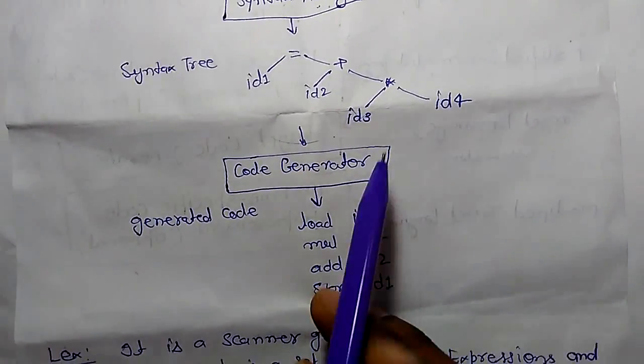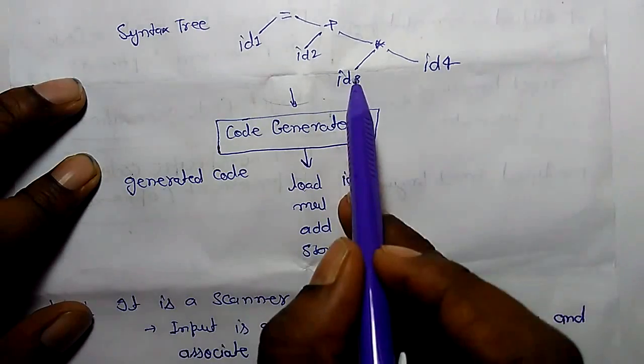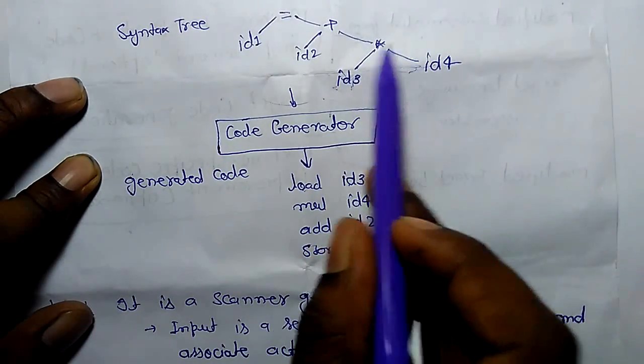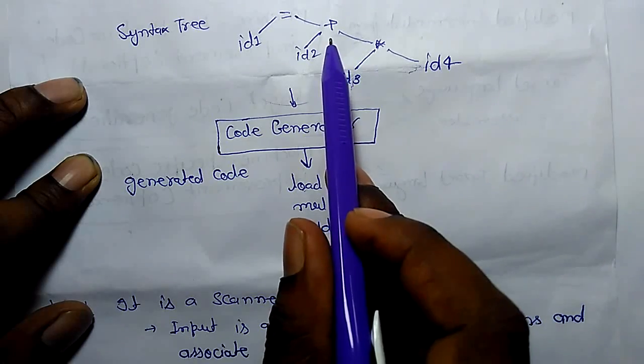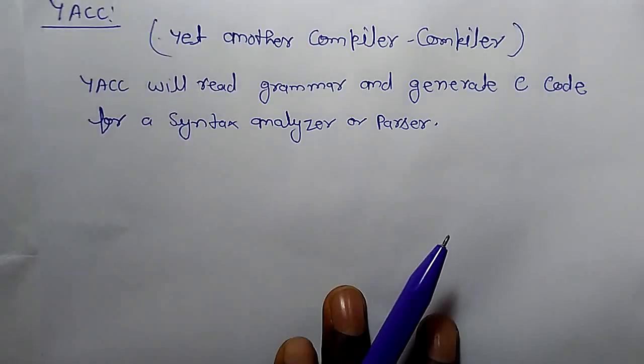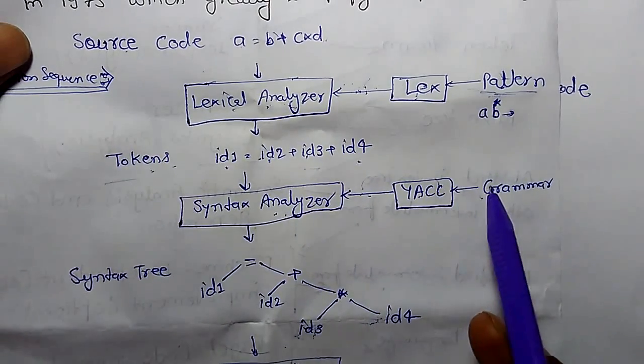In this syntax tree, first you have loaded id3 because this operation should be performed first, it is C and D, after the multiplication add and allocate value to id1. So YACC takes input as grammar and generates parser.